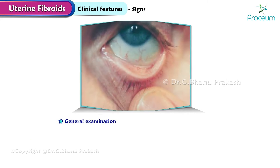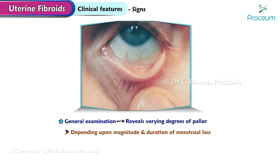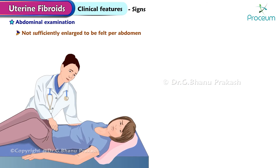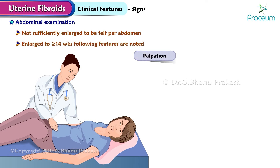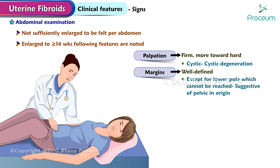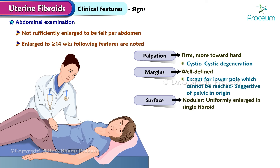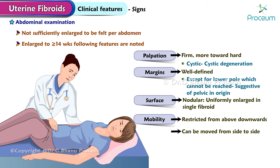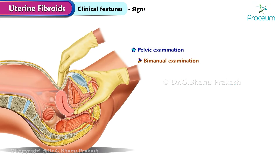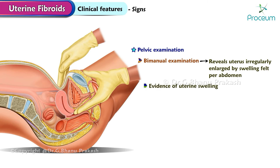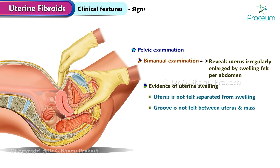Signs: general examination reveals varying degrees of pallor, depending upon the magnitude and duration of menstrual loss. Abdominal examination: the tumor may not be sufficiently enlarged to be felt per abdomen, but if enlarged to 14 weeks or more, the following features are noted. Palpation feel is firm, more toward hard; may be cystic in cystic degeneration. Margins are well-defined except for the lower pole. Surface is nodular, may be uniformly enlarged in a single fibroid. Mobility is restricted from above downwards but can be moved from side to side. Pelvic examination by manual examination reveals the uterus irregularly enlarged. The swelling is uterine as evidenced by: the uterus is not felt separately from the swelling, and a groove is not felt between the uterus and the mass; the cervix moves with the movement of the tumor felt per abdomen.